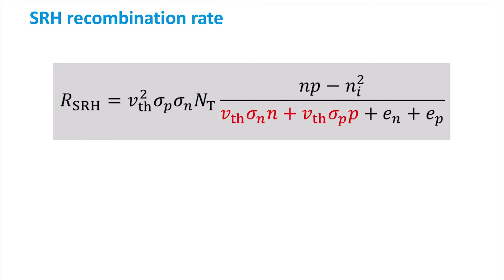The first two terms in the denominator indicate the occupancy of the traps. After all, when a trap is occupied, it cannot capture another charge carrier of the same type. Finally, the last two terms in the denominator are the emission coefficients, which indicate the rate of carrier emission.